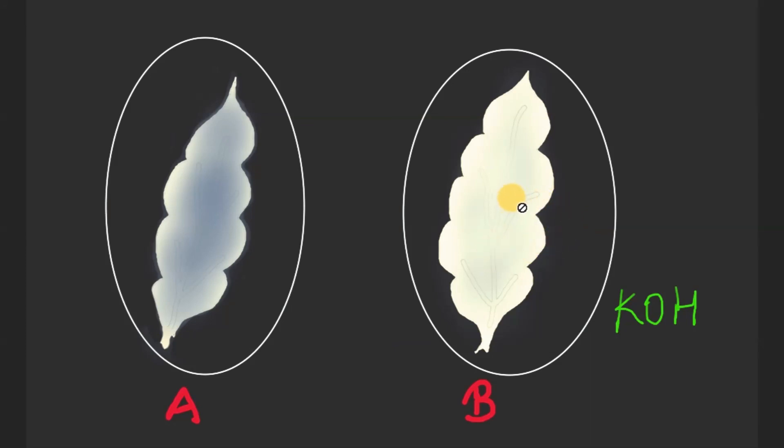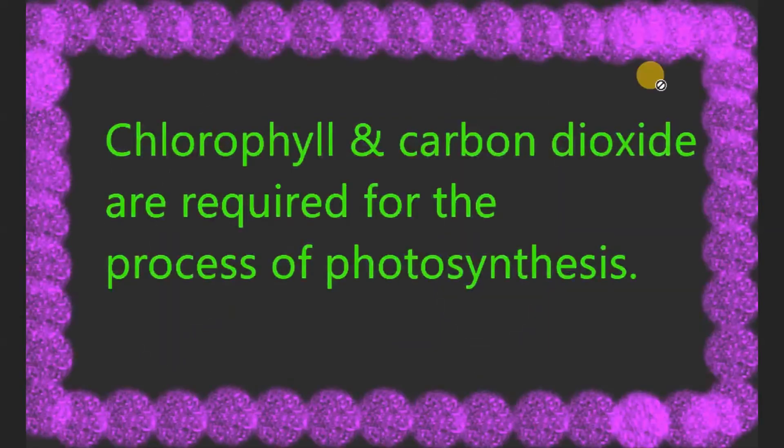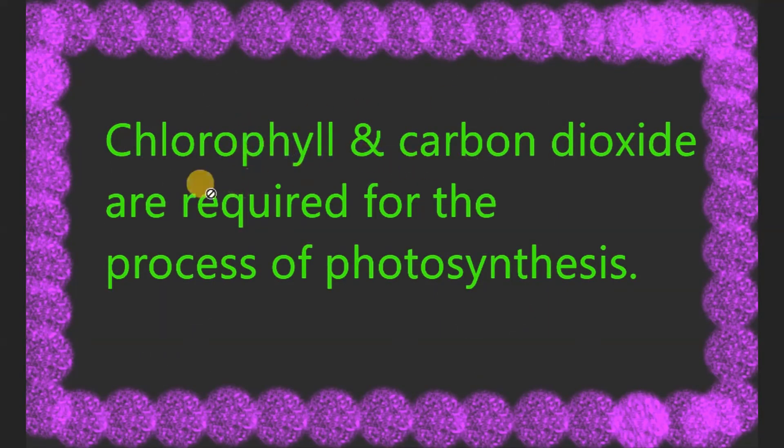This shows that chlorophyll as well as carbon dioxide are required for the process of photosynthesis. So chlorophyll and carbon dioxide both are required for the process of photosynthesis.